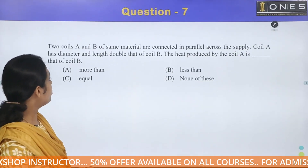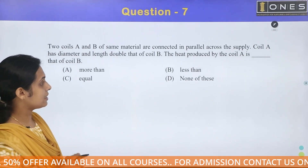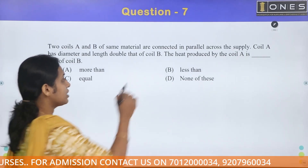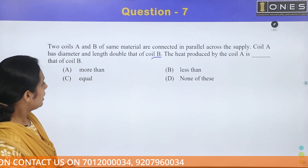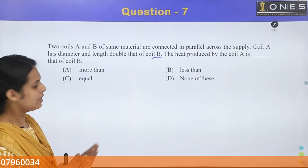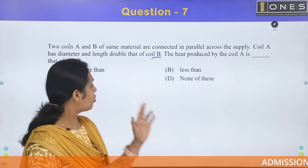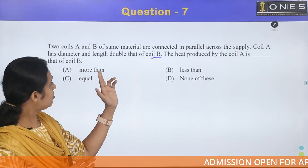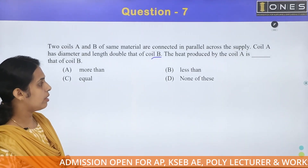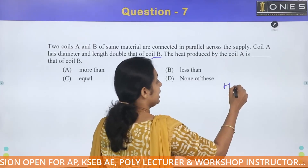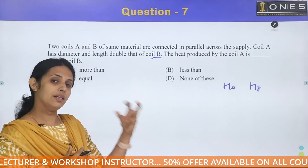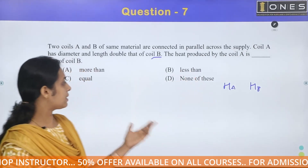Next question. Two coils A and B of the same material are connected in parallel across a supply. Coil A has diameter and length double that of coil B. We need to find the heat produced by coil A compared to coil B — that is, the relationship between HA and HB.